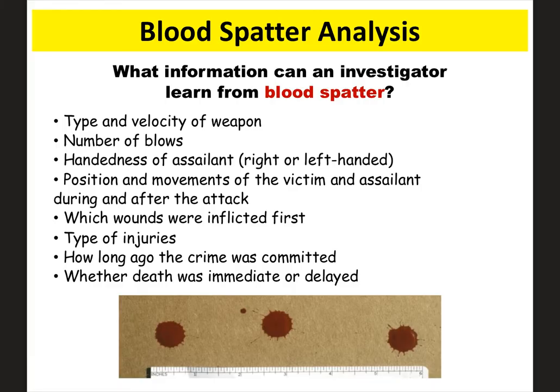There's a lot of different information you can learn from blood spatter evidence. You can learn about the type of weapon that was used, maybe how many times a person was hit or attacked. You might be able to figure out if the suspect was right or left handed, where people were located, and the movement of the crime. You might be able to figure out specific types of injuries from the evidence. It could also tell you information about how long ago it was committed, and you can even get information about how long it took for the person to die — was it immediate or a little more prolonged? So there's a lot of information you can get from blood spatter evidence.